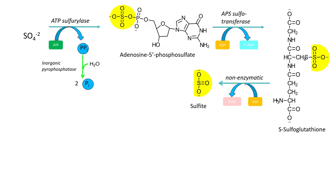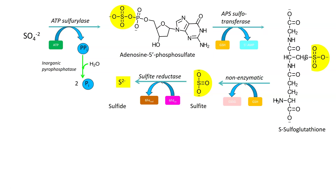Notice this sulfite is now devoid of one of the oxygens and also has two negative charges on it. With a sulfite reductase using ferrodoxin, you get sulfide, which is just plain S with none of the oxygen on it.